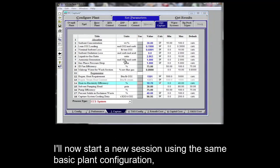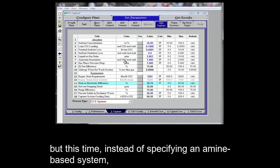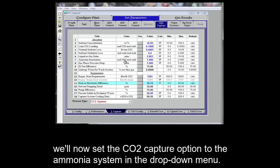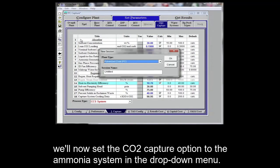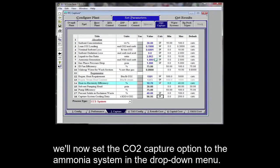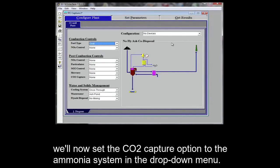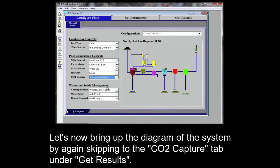I'll now start a new session using the same basic plant configuration, but this time, instead of specifying an amine-based system, we will now set the CO2 capture option to the ammonia system in the drop-down menu. Let's now bring up the diagram of the system by again skipping to the CO2 capture tab under get results.